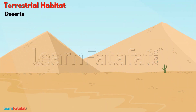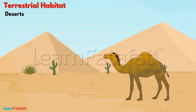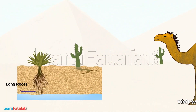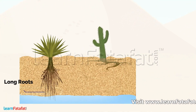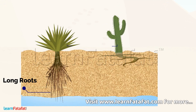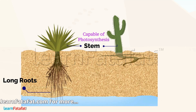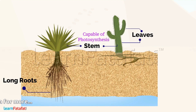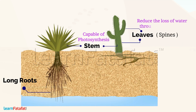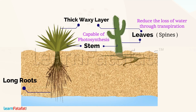The biotic factors include different plants and animals. The plants have long roots in order to reach groundwater. The plants have a green stem capable of photosynthesis. Leaves are generally absent; if present, they are very small or in the form of spines, which helps to reduce the loss of water through transpiration. There is a thick waxy layer on their stem which helps to preserve water in their tissues.